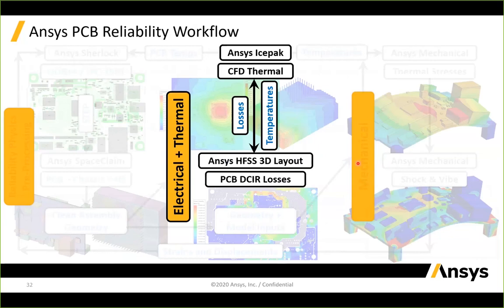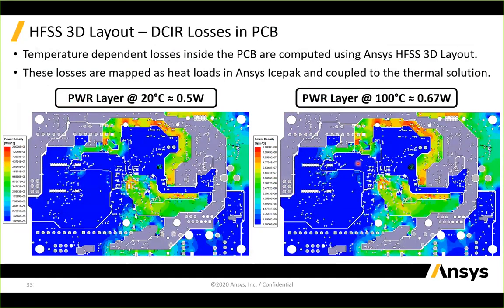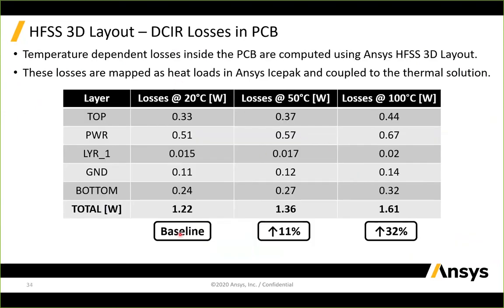In IcePack, we loop back and forth between IcePack and 3D Layout to get converged temperatures and losses. To illustrate temperature dependence: at 20°C the PWR layer produces about 0.5 W total DCIR loss; at 100°C it goes up to 0.67 W. Looking layer by layer with 20°C as baseline, total board losses are 1.2 W. At 50°C they increase by 11%; at 100°C by 32%. As temperatures push toward product limits, these losses become really important and are expected to have both thermal and reliability impacts.